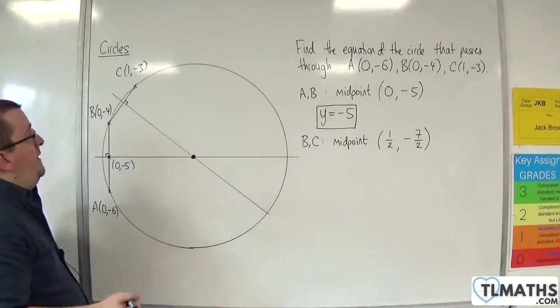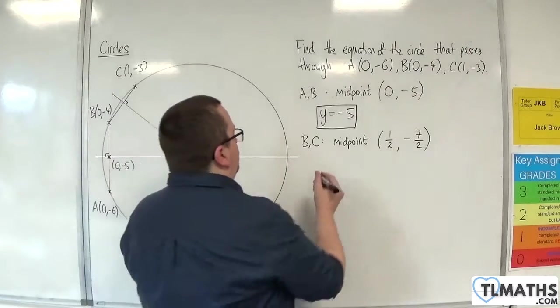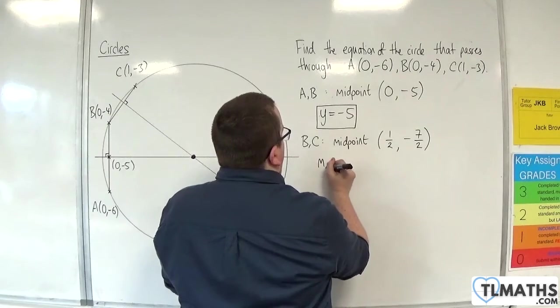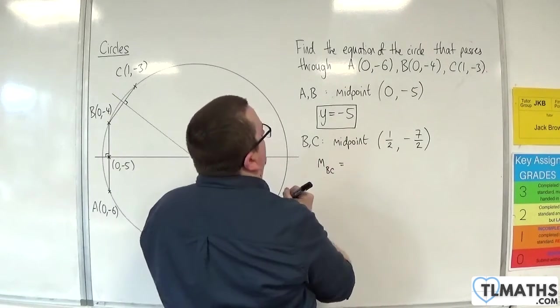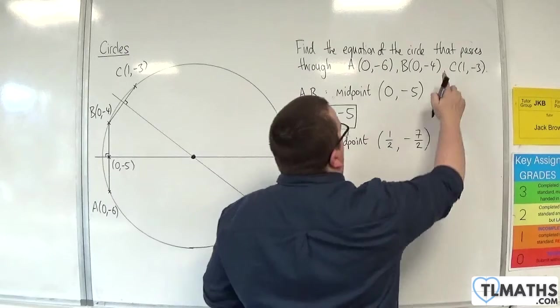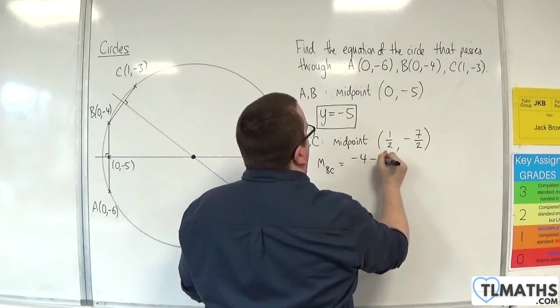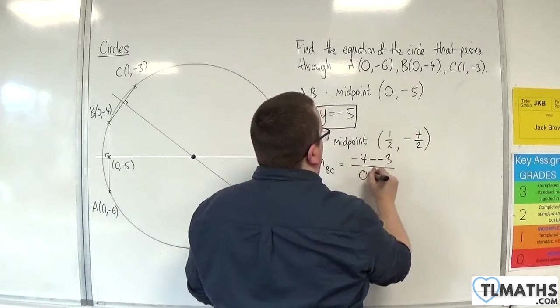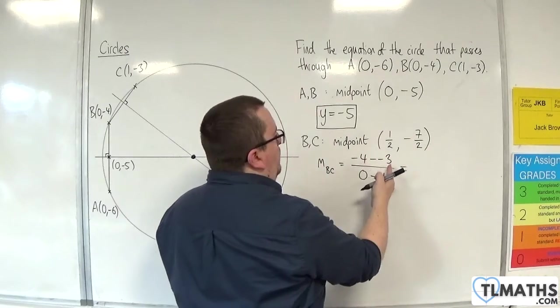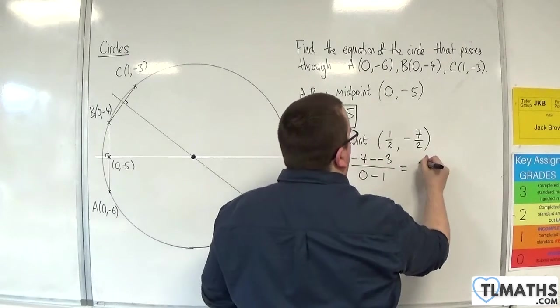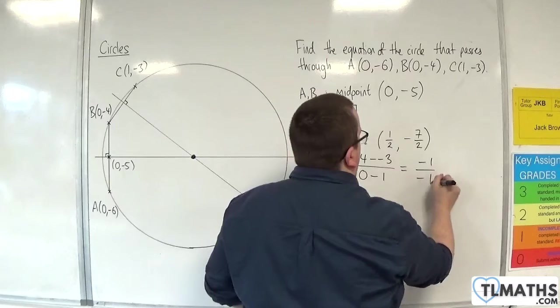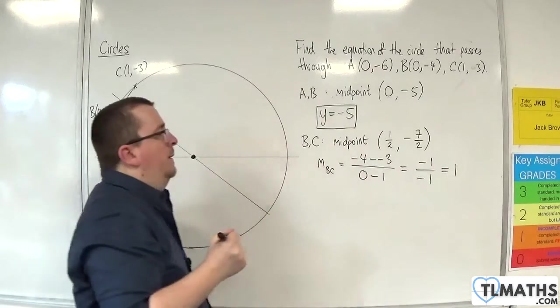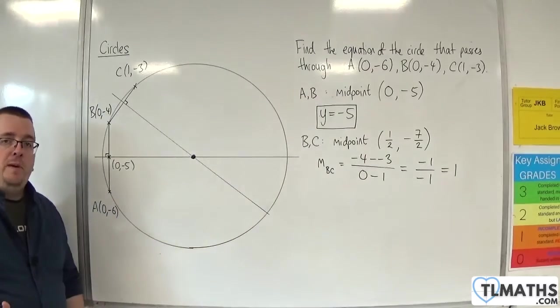Now we need to work out the gradient between B and C. So the gradient of BC is going to be the difference in the y-coordinate. So -4 take away -3, divided by 0 take away 1. So -4 plus 3 is -1 over -1. And of course, that's just 1. So the negative reciprocal of that would just be -1.